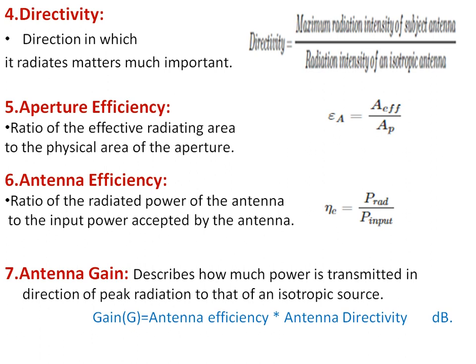The next is directivity — the direction of radiation of a particular signal by that antenna. It should be high in a specific or desired direction. The formula is: the maximum radiation intensity of the subject antenna divided by the radiation intensity of an isotropic antenna. The isotropic antenna is a hypothetical reference antenna which radiates equally in all directions — which is practically impossible. Ideally for an isotropic antenna the antenna radiates in equal proportion to all directions.